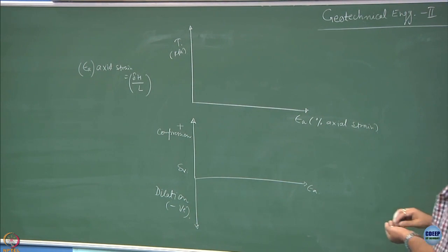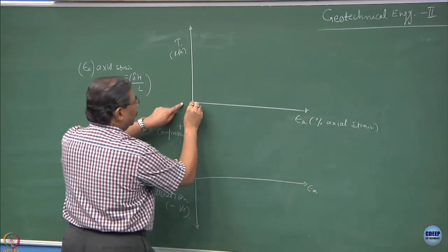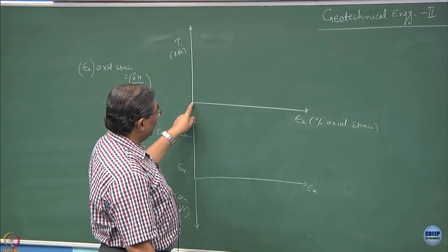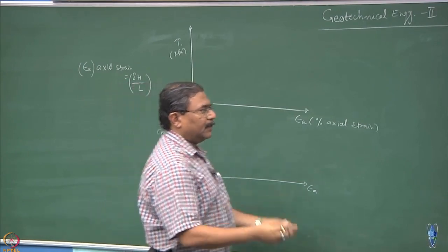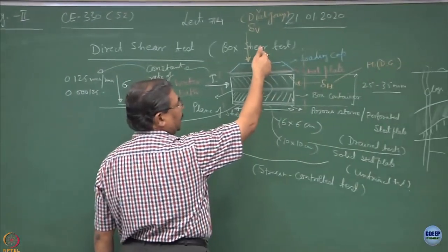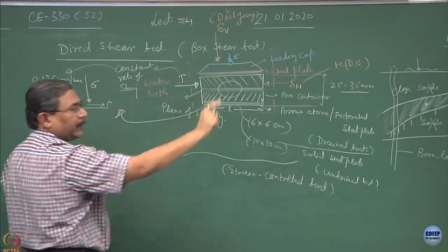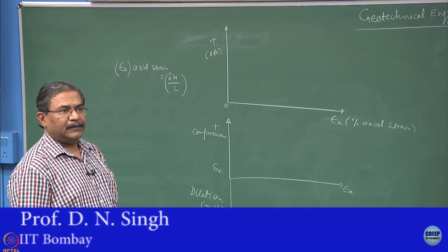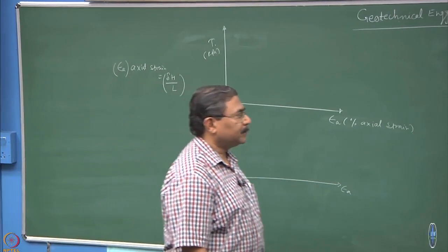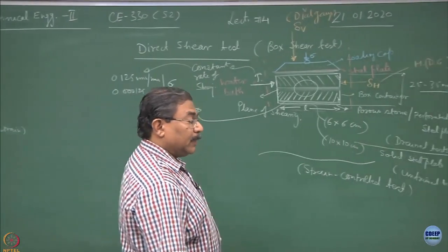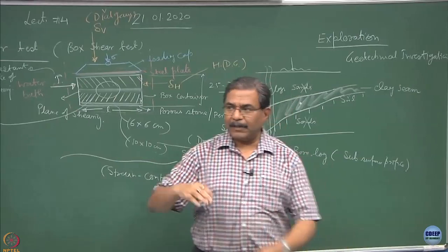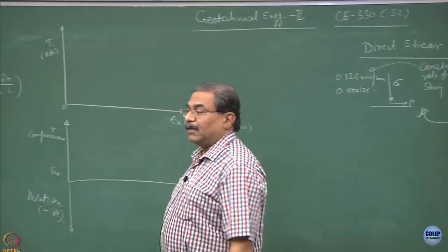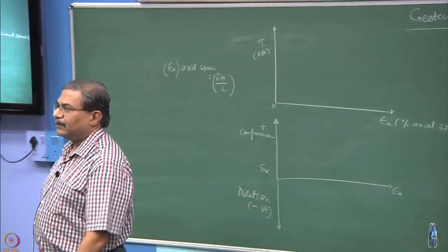Now what happens is starting from this point static condition, there is no shearing going on on the sample. What you have done is you prepare the sample, kept it in the direct shear box setup applied the sigma value, no shearing. There might be some compression, particularly if the soil is dry. If soil is saturated, there will be less compression and if compression occurs, the densities are going to change. Now we are going to plot the response of the material once the shearing starts, not before that.